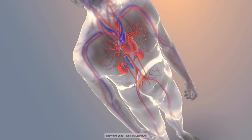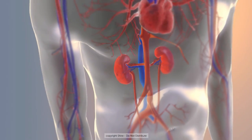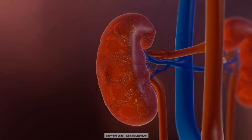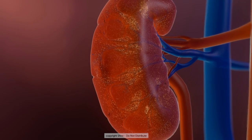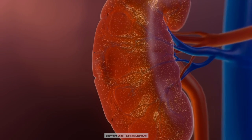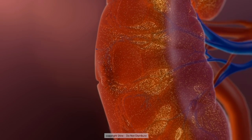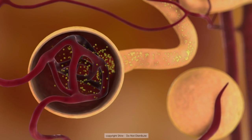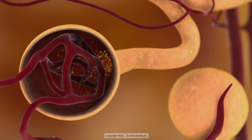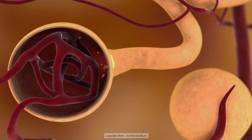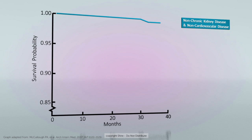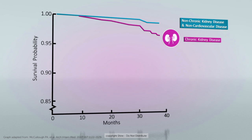Fabry disease also affects the kidneys as GB3 accumulates in the renal glomerulus, causing progressive deterioration of renal function and ESRD. This in turn impacts cardiovascular risk, as it is often cardiovascular complications that are the cause of death in patients with chronic kidney disease.